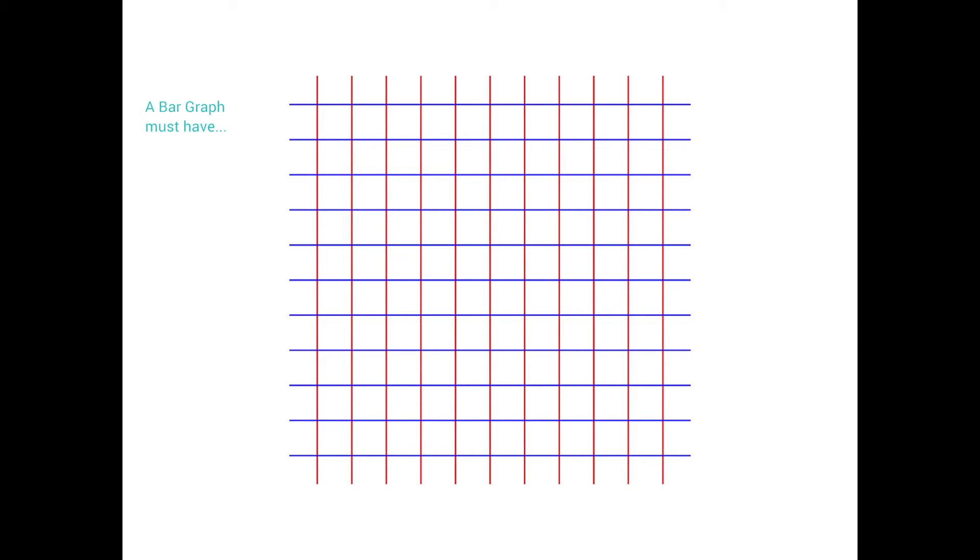A bar graph must have an x-axis and a y-axis. And if you don't know what that means, simply put it is this here. Now my program does not have a fancy ruler so my line will look crooked, but if you're doing this by hand you should use a ruler.